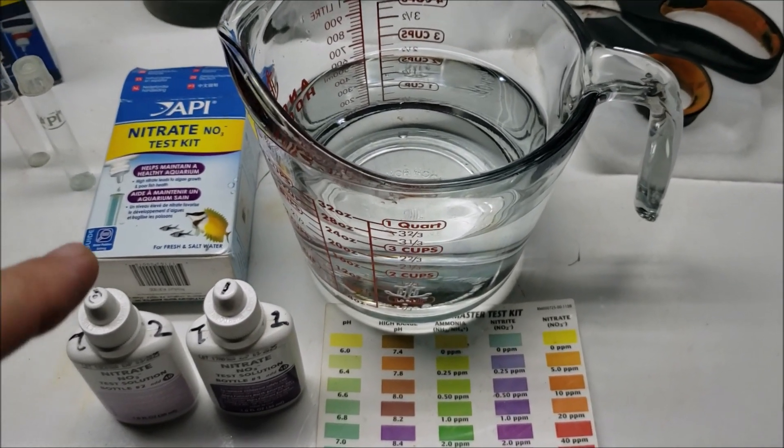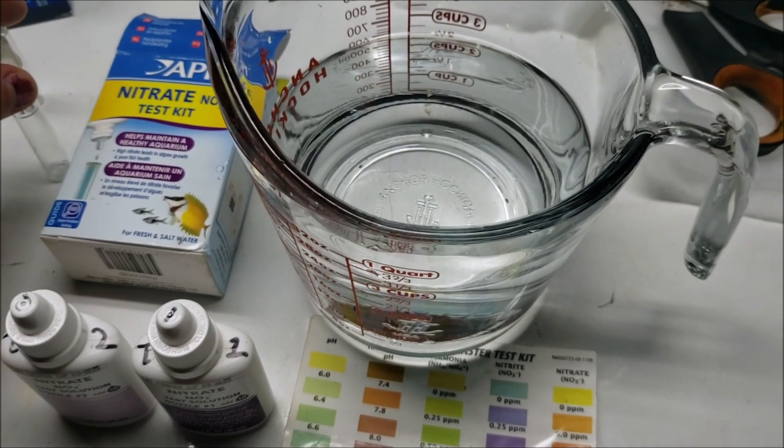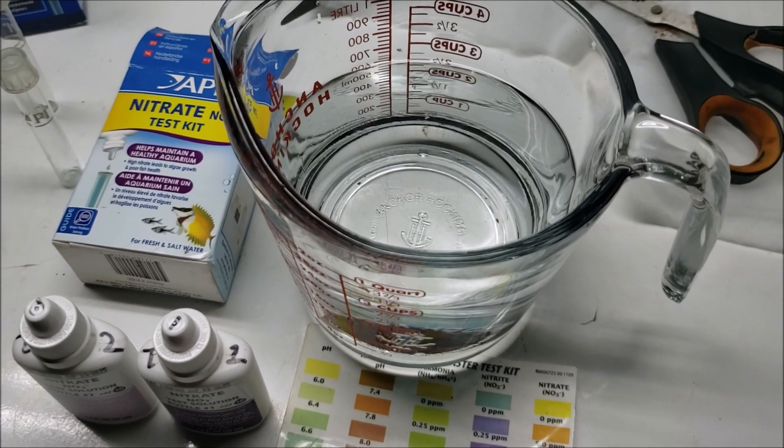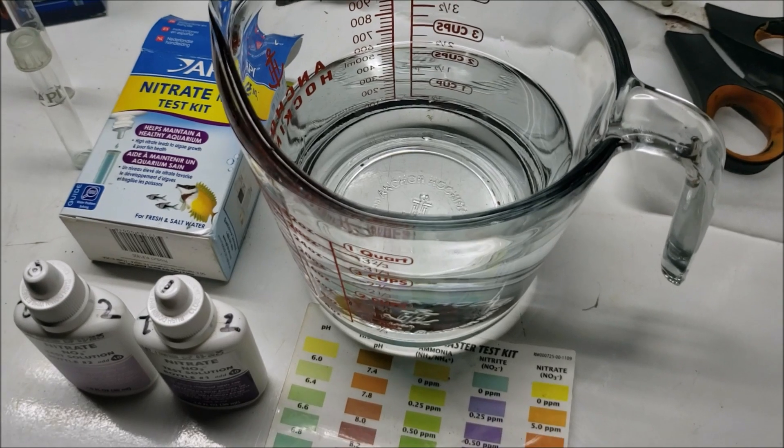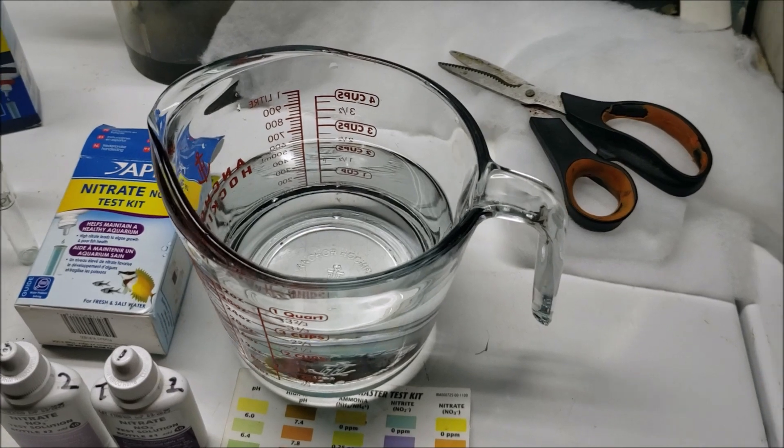What we're going to do today is a nitrate test on my tap water. You can see how crystal clear it is. We'll get a result that'll be nice and yellow because there's no nitrate in it whatsoever, so we'll have an established amount. Then we are going to artificially stain the water with some tannin.